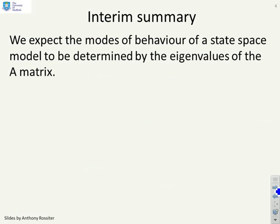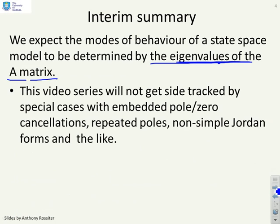So an interim summary. We expect the modes of behavior of a state-space model to be determined by the eigenvalues of the A matrix, because they're the poles you get in your transfer function. Now we're not going to get sidetracked by special cases where you have embedded pole-zero cancellations in your state-space model, or if you have repeated poles and non-simple Jordan forms and the like. You can look up those details in textbooks but they're a bit of a distraction in general.